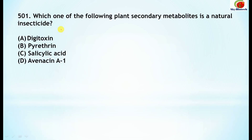Question 501: Which one of the following plant secondary metabolites is a natural insecticide? The correct answer is pyrethrin — yes, this one is the natural insecticide and it is a plant secondary metabolite.